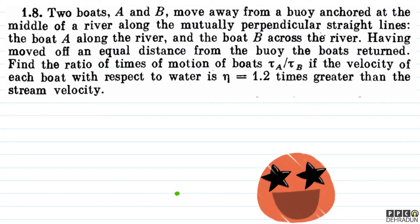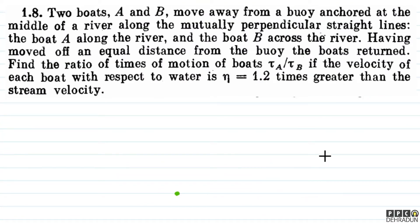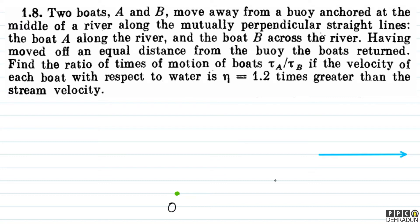So let's have a look at the question. Basically, we have a river. This direction is the stream velocity. Now we have two boats A and B, and they are anchored at the middle of a river. Let us say that the point is here — this point is named O. Now, these two boats travel along mutually perpendicular straight lines in the ground frame. Boat A moves along the river.